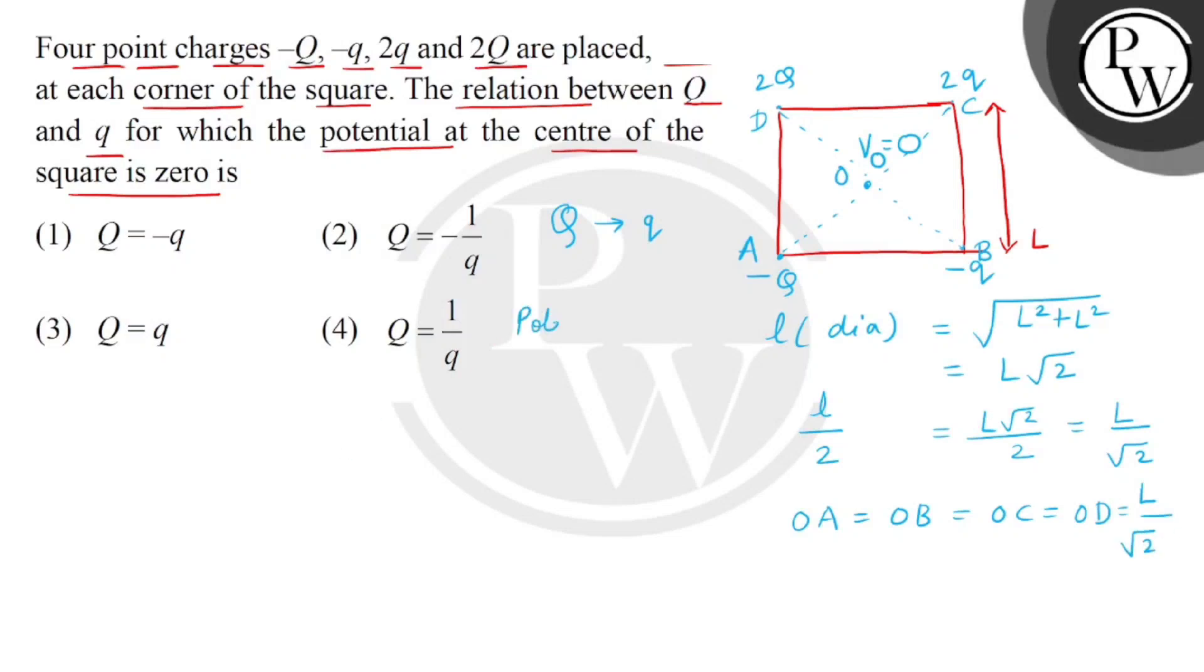When we calculate electric potential, the most remarkable point is that electric potential is a scalar quantity. So, what will we find? The electric potential at O is equal to all the potentials added. Potential due to A plus potential due to B plus potential due to C plus potential due to D.